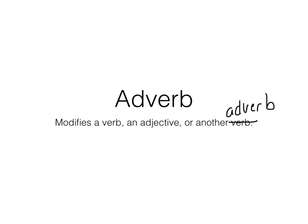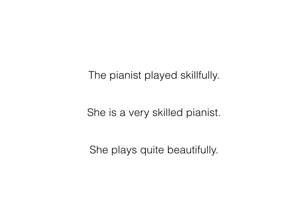We'll take a look at how they do that. First, we have three sentences here. One will modify a verb, another an adjective, and finally an adverb. The first sentence: we have 'the pianist played skillfully.' We have the subject, pianist. We have the verb, played. Then we have the word skillfully, which is describing the word played, so it's describing a verb.